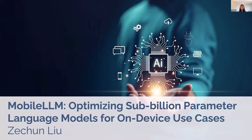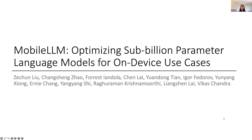In the past few months, our team has been working on optimizing LLMs to operate efficiently on devices such as smartphones and wearables, while preserving their performance and accuracy. To accomplish this, we developed architecture designs tailored for LLMs with sub-billion parameters, optimized by considering the storage limitations of edge devices. This work was conducted in collaboration with colleagues at Meta, and the paper is available on arXiv.